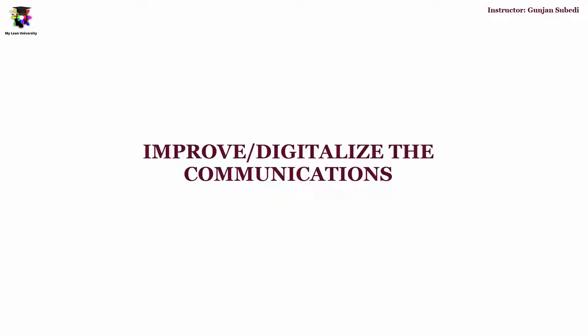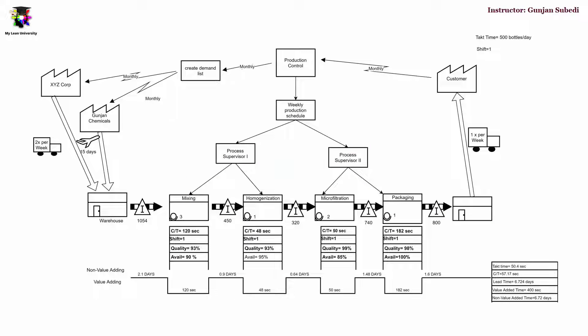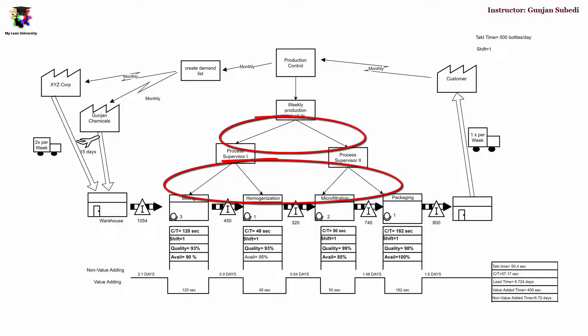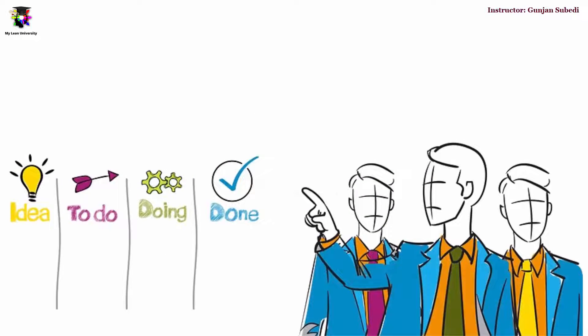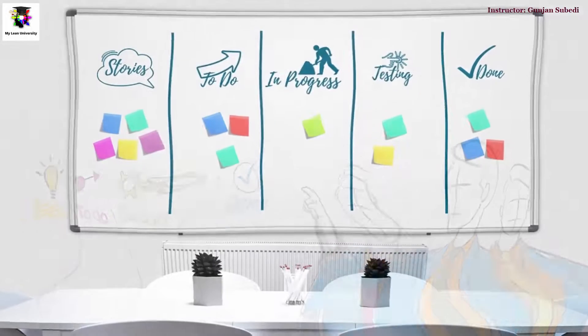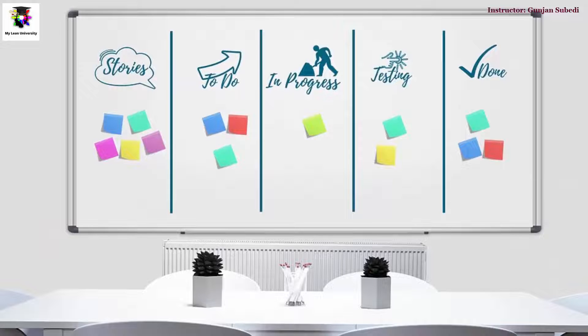The next improvement can be made in communications. In the current state map we see that there are many verbal communication channels, and the straight arrow shows that communication is done manually. We can improve communication with internet-based solutions, adopt software for effective communication, and also keep software for good stock record of materials. You can also introduce Kanban boards for communication — these contain boards with different stickers denoting the progress of a process, so by visual observation we can know whether the process has started, is underway, or is completed. This acts as a good method of visual communication.